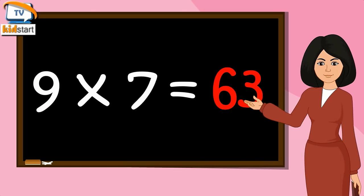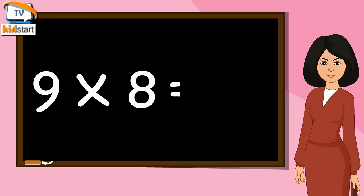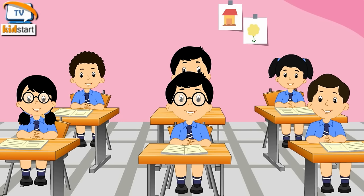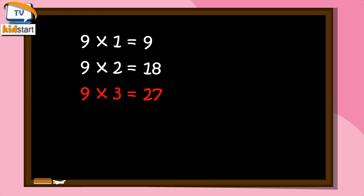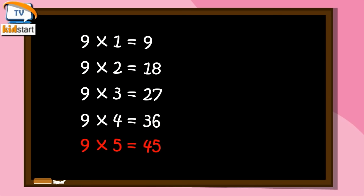Nine eights are seventy-two. Nine nines are eighty-one. Nine tens are ninety. Nine ones are nine. Nine twos are eighteen. Nine threes are twenty-seven. Nine fours are thirty-six. Nine fives are forty-five. Nine sixes are fifty-four.